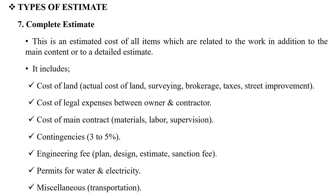The next type of estimate is the Complete Estimate. This is an estimated cost of all items which are related to the work, in addition to the main content of the detailed estimate.